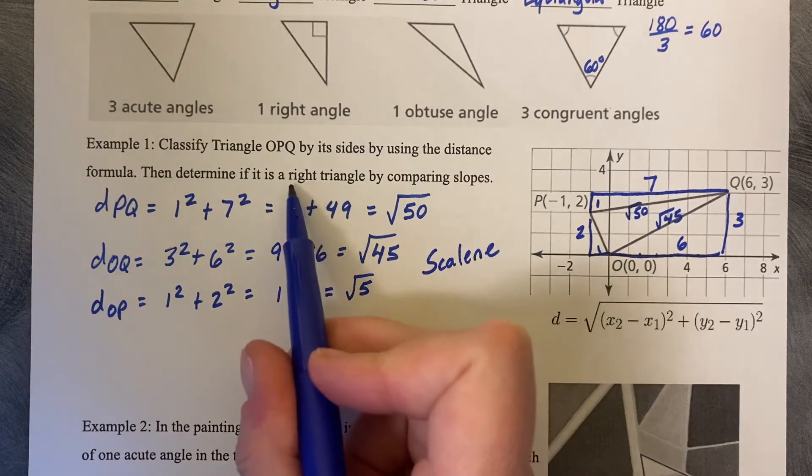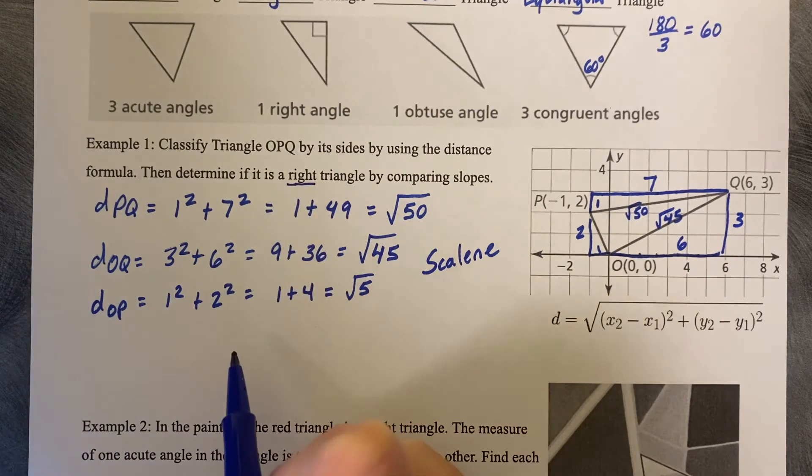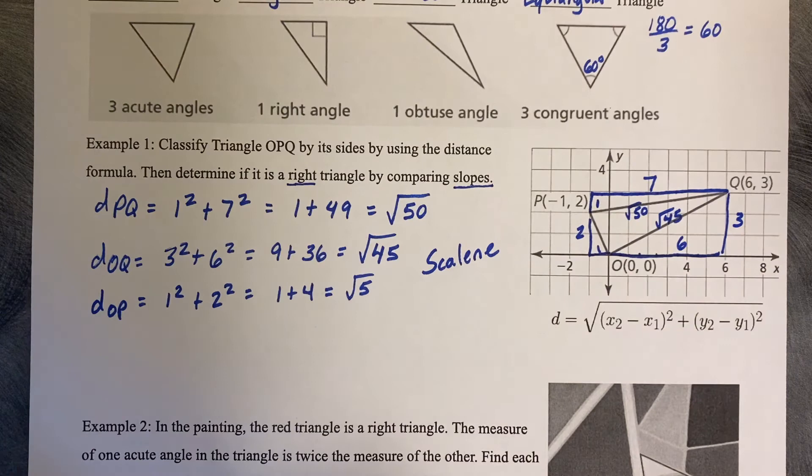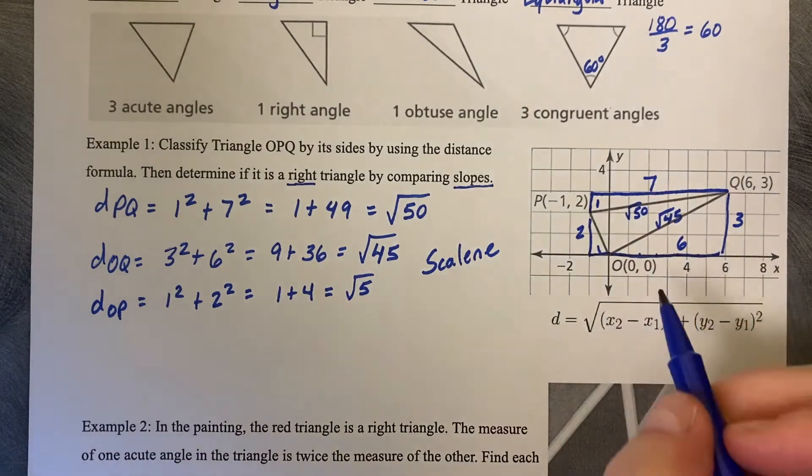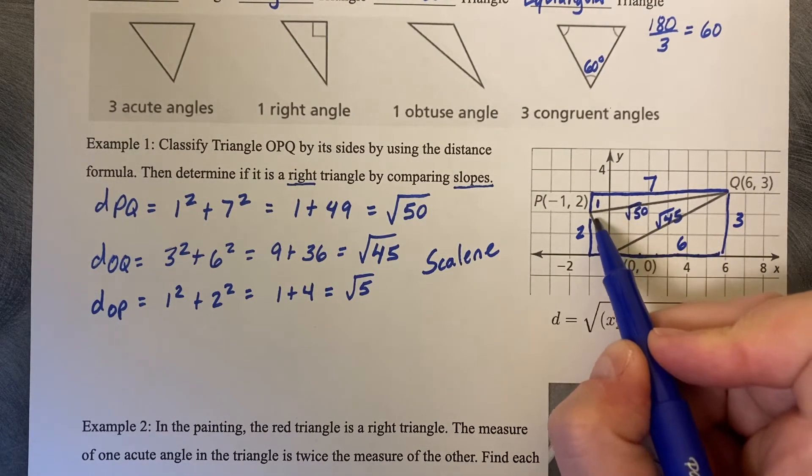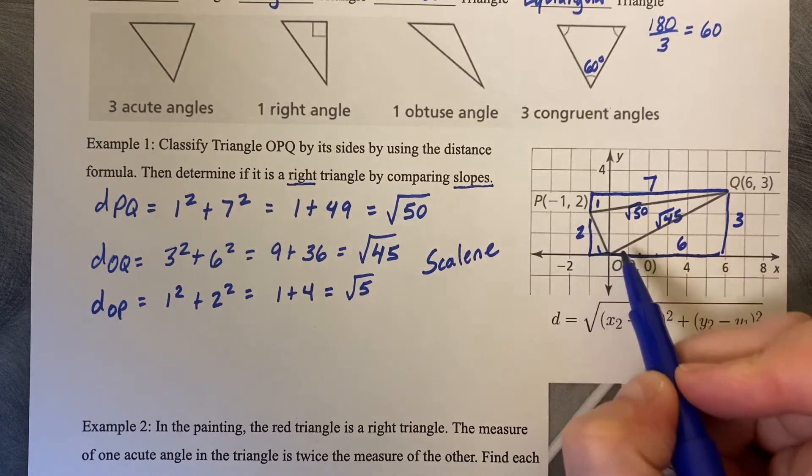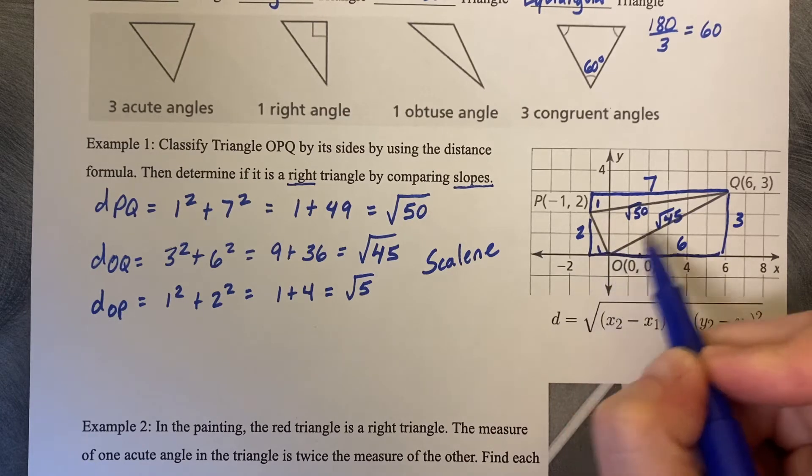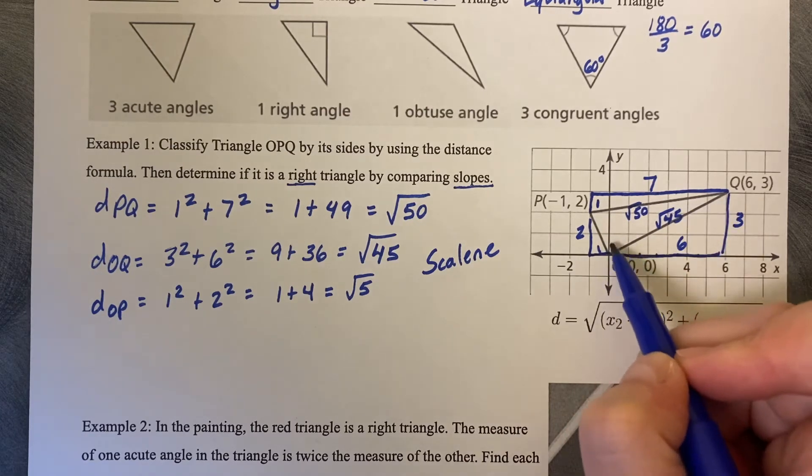Now, the last thing is determine if it's a right triangle by comparing its slopes. So first thing you should do is kind of guesstimate where you think a right angle may live on the diagram, because you don't want to just fish around. Clearly, this is not going to be a right angle. Clearly, this one is not a right angle. But the only one that looks like it could be a right angle is right here in the corner from PO to OQ.